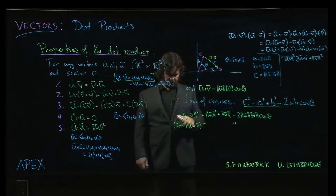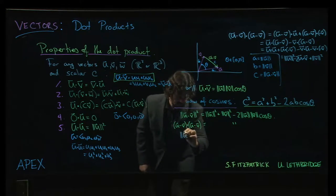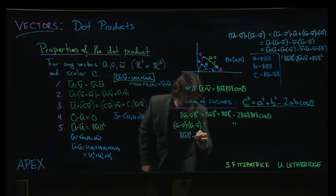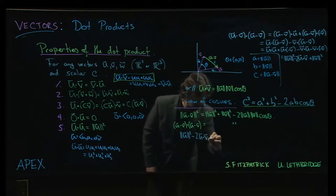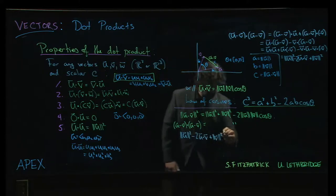Okay, so now we plug all that in, magnitude of u squared minus 2u dot v plus the magnitude of v squared,